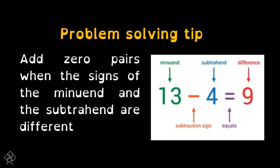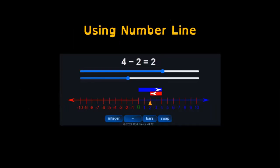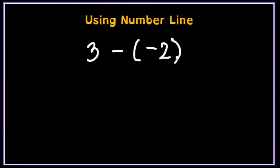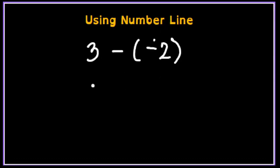Problem-solving tip: add zero pairs when the sign of the minuend and the subtrahend are different. Now, ipapakita ko naman sa inyo yung paggamit ng number line sa subtracting integers. We will use a number line to subtract the following integers. In all cases, remember this: change the sign of the subtrahend, then proceed to addition. Ang subtrahend dito ay si negative 2, so kung dating negative yan, magiging positive yan. At itong subtraction, magiging addition yan.